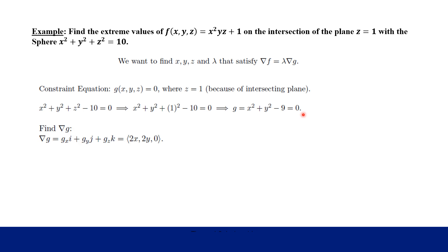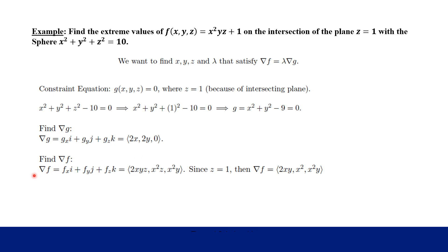We need both gradient vectors, one for G and one for F. The gradient of G is found by taking partial derivatives with respect to X, Y, and Z: we get ⟨2x, 2y, 0⟩ since there's no Z term. For the gradient of F, the partial with respect to X is 2x · y · z, with respect to Y is x² · z, and with respect to Z is x² · y. Since z = 1, we substitute that in to simplify the gradient of F.